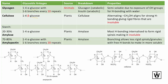Glycogen is the only one found in animals — it is used for storage, keeping glucose molecules in the liver and muscles. Plants store glucose as starch, which is 20–30% amylose and 70–80% amylopectin. Cellulose is found in the cell walls of plants, giving structure to wood and making up fibers like cotton.